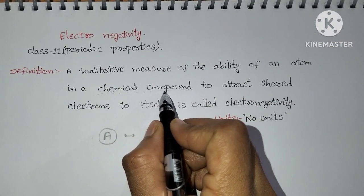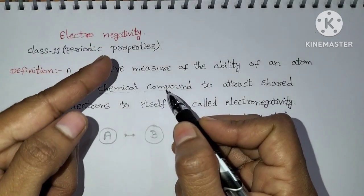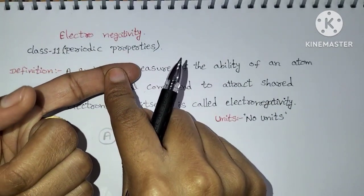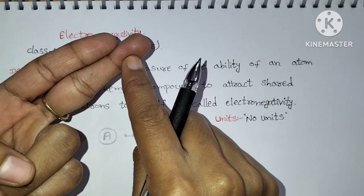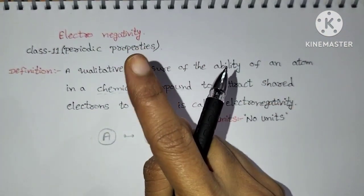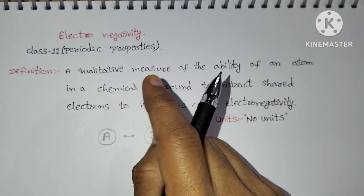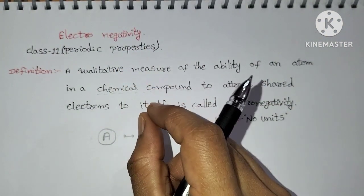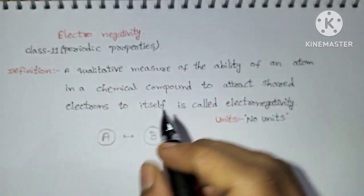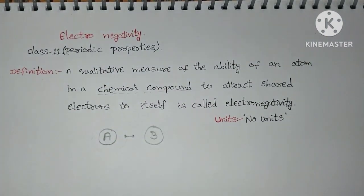It is important to observe that electronegativity is defined in a chemical compound. In previous topics, for example ionization energy or electron gain enthalpy, we considered an isolated neutral gaseous atom. But electronegativity is a property explained in the context of a chemical compound.